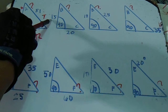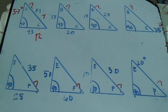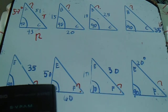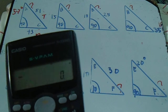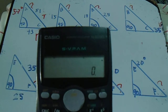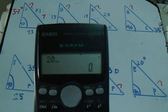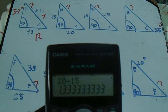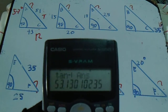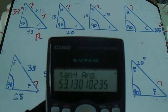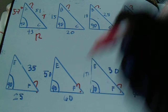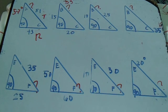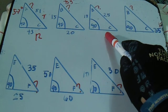Next is number two. We have a given of run and set. We will find the degrees with the same procedure but with different values. Just divide 20 by set 15, then press shift and choose tangent. Our degrees is 53 degrees.